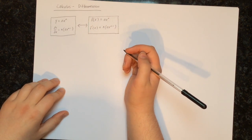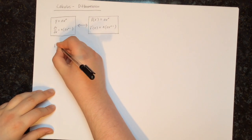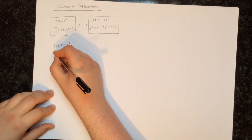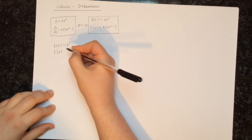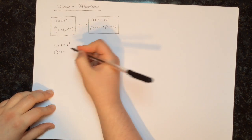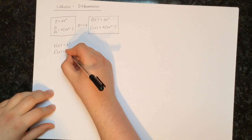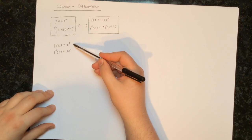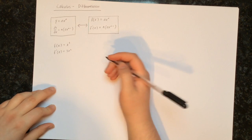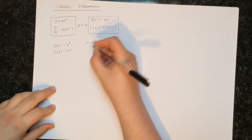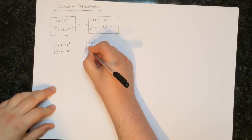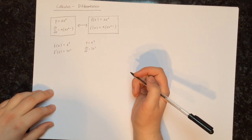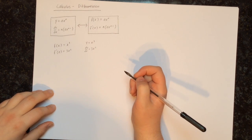Let's go through some examples so you can see that in practice. If f of x equals x cubed, then the derivative f dash of x is found by multiplying by the power — that's 3 — and reducing the power by 1, down to 2. So f dash of x equals 3x squared. This is exactly the same as saying y equals x cubed and dy/dx equals 3x squared.